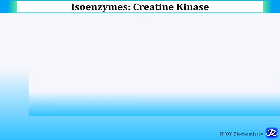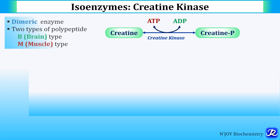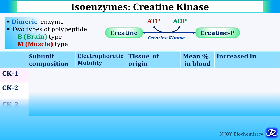Now let's see the isoenzymes of creatine kinase. It catalyzes the conversion of creatine to creatine phosphate, with ATP as the phosphate donor. Creatine kinase is a dimeric enzyme with two types of polypeptide: B (brain type) and M (muscle type). There are three isoenzymes: CK1, CK2, and CK3.